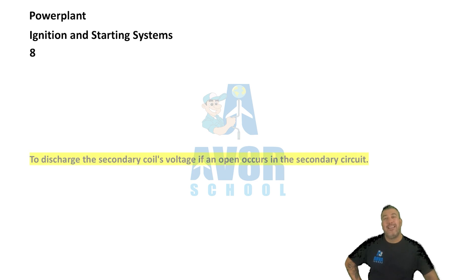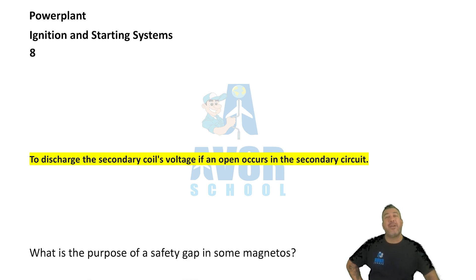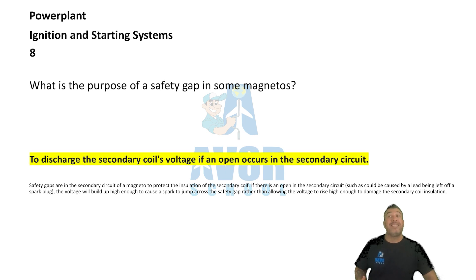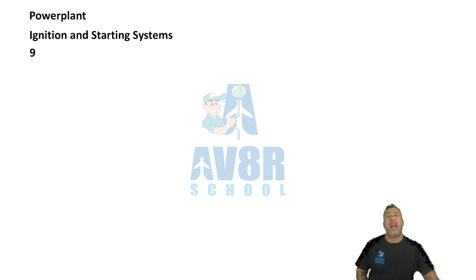Number eight: To discharge the secondary coil's voltage if an open occurs in the secondary circuit. What is the purpose of the safety gap in some magnetos? To discharge the secondary coil's voltage if an open occurs in the secondary circuit.